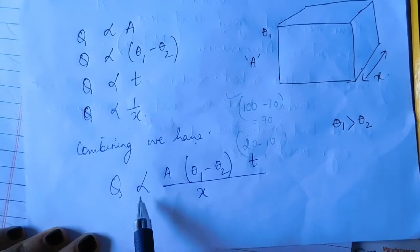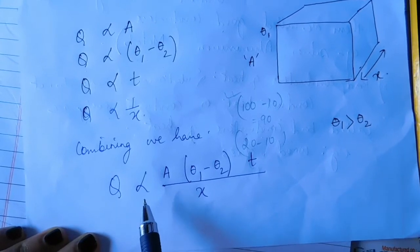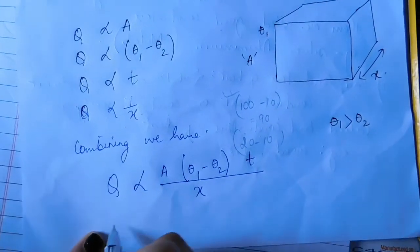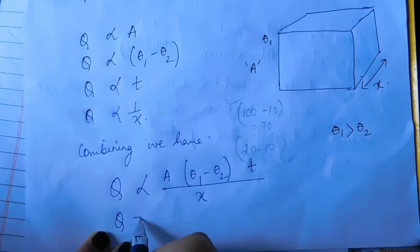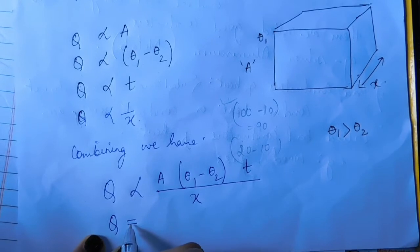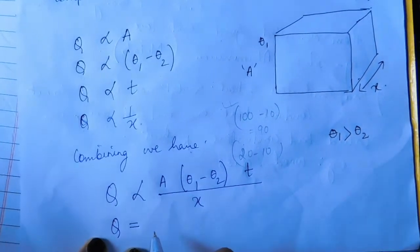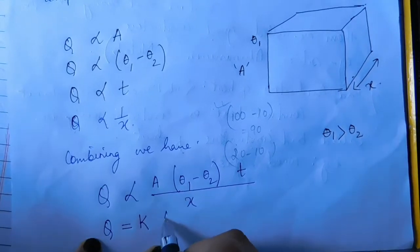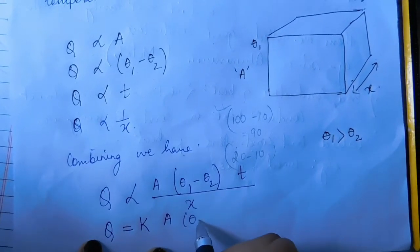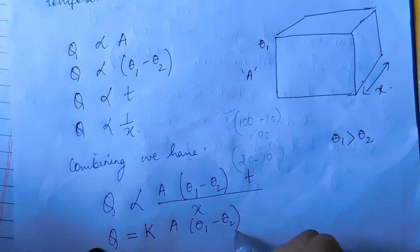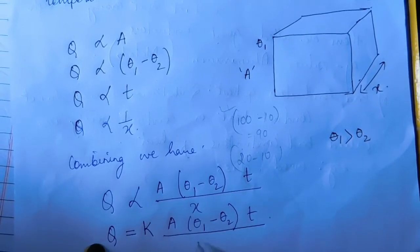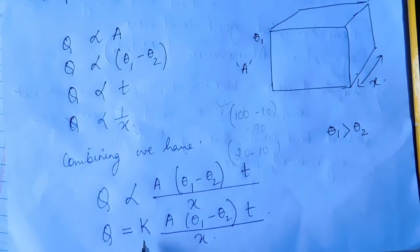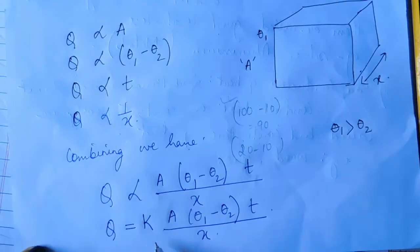In order to remove the proportionality sign and replace it with an equals sign, we insert a constant K. So we get: Q equals K times A times (θ1 minus θ2) times T, divided by x. The constant K we have inserted is the thermal conductivity, also known as the coefficient of thermal conductivity.